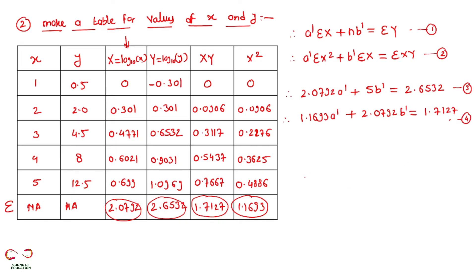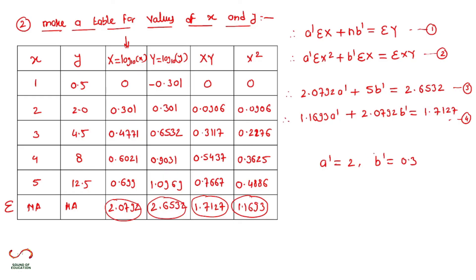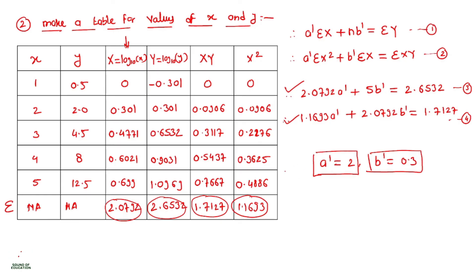Convert these two equations into matrix form and solve using the Gauss elimination method, which you already know. After solving, A-dash is equal to 2 and B-dash is equal to 0.3.